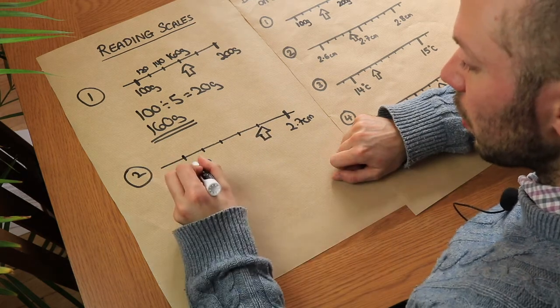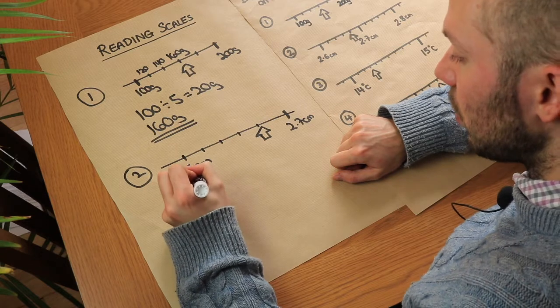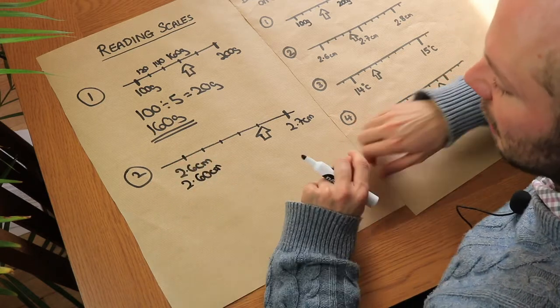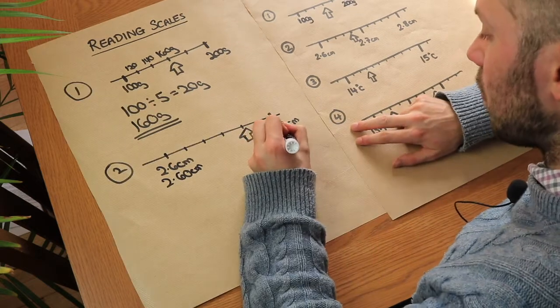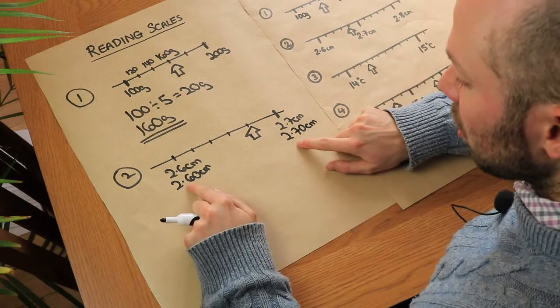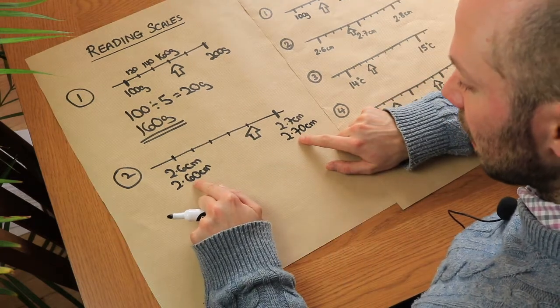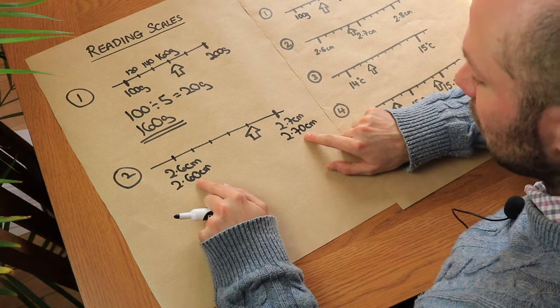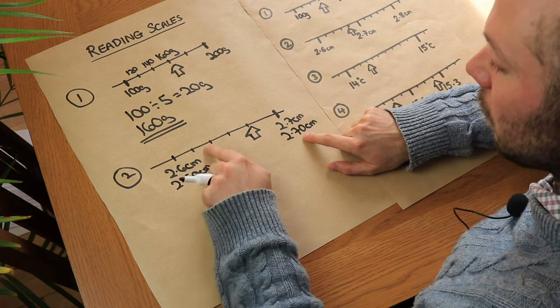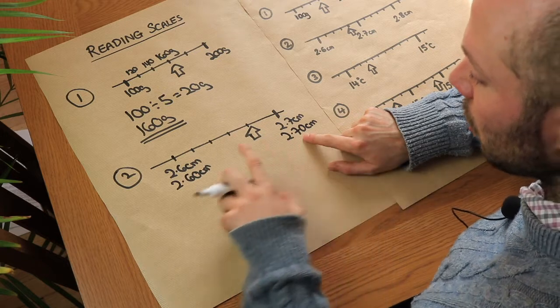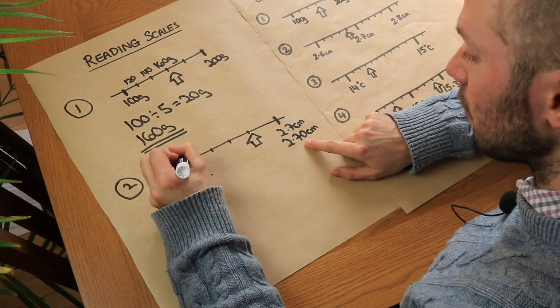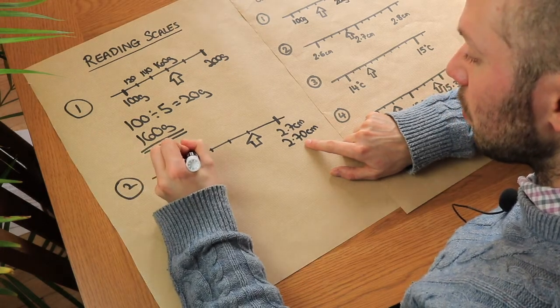Now it might help if we put a zero on the end of these. So we have 2.60 centimeters because 2.60 centimeters is exactly the same as 2.6 and that would be 2.70 centimeters. Now if we just look after the decimal point we can see that's 60, that's 70, that's a difference of 10 and that's been divided into five. So 10 divided by 5 is 2 which means it's going to go up by two hundredths each time.